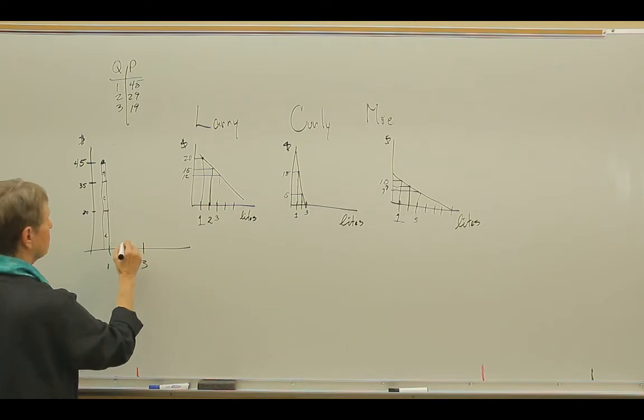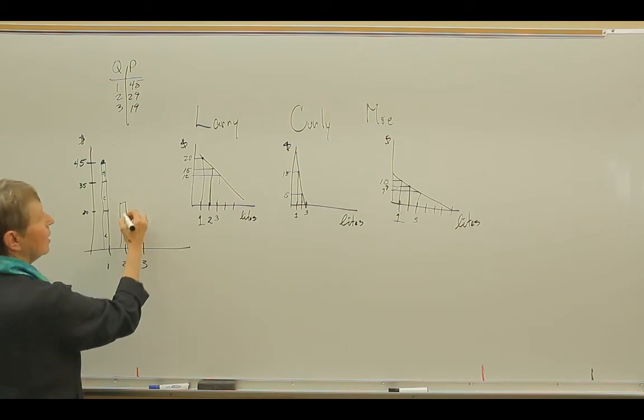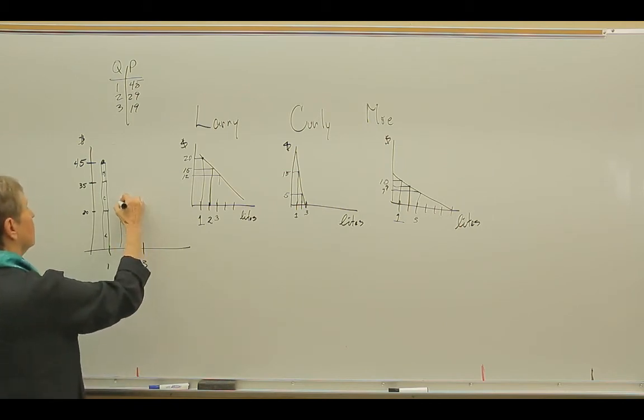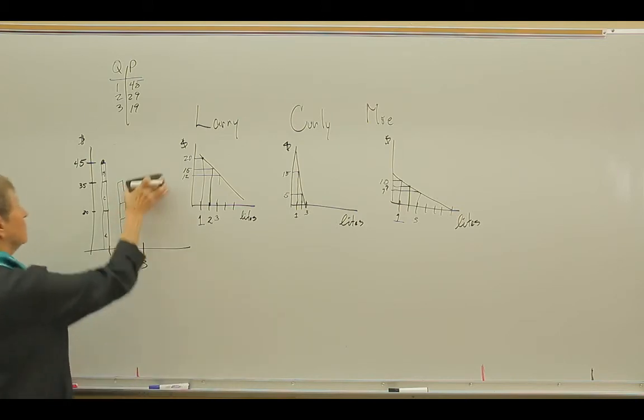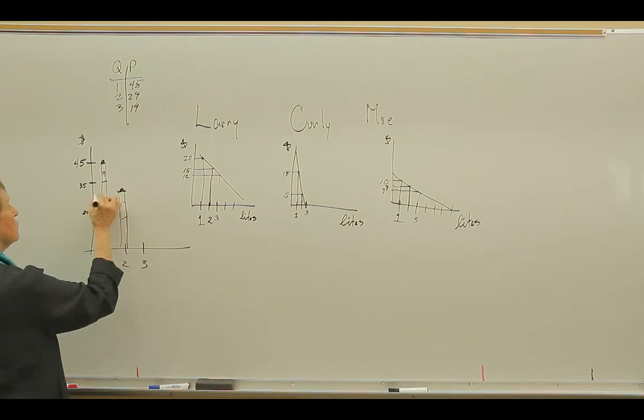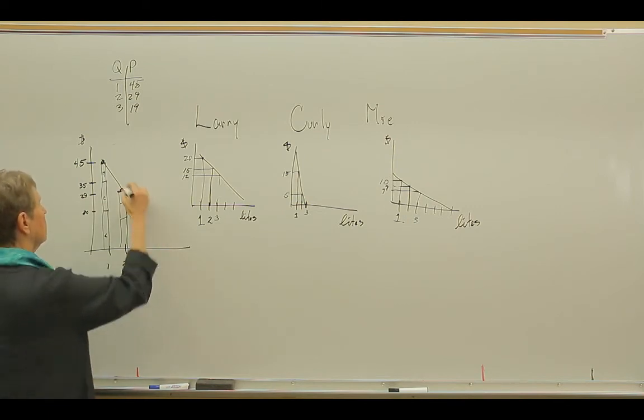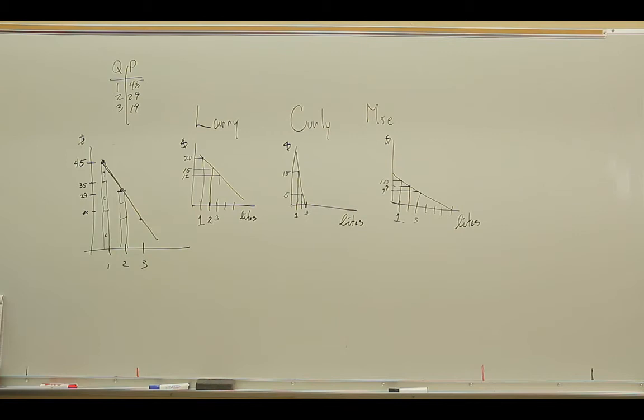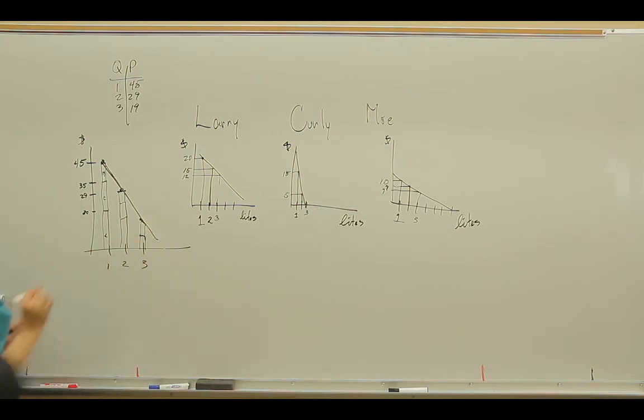The second street light is $15 and $5 and $9. And that turns out to be $29. Whoops, that's not drawn to scale. So that's $29. And street light number three is worth $19. So that's right here. So there's my market demand curve. Again, stacking individual demand because it's a public good.